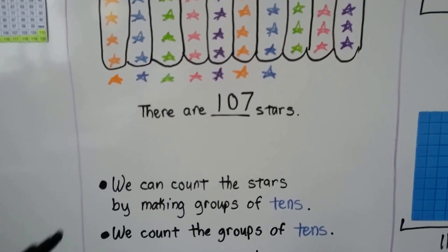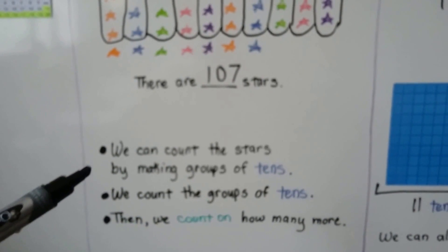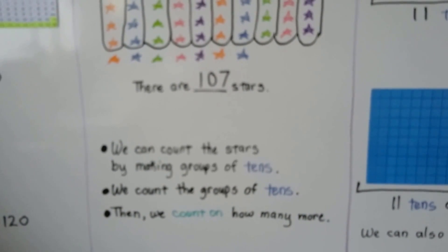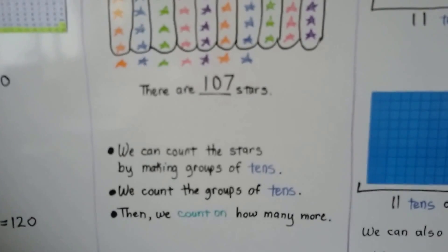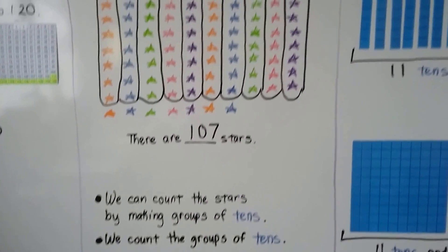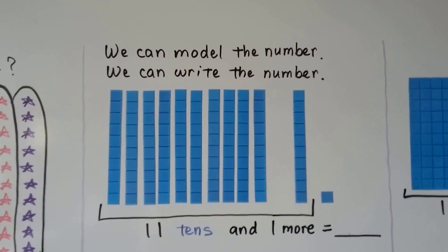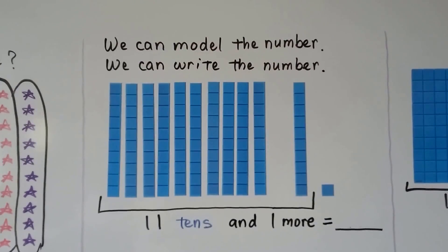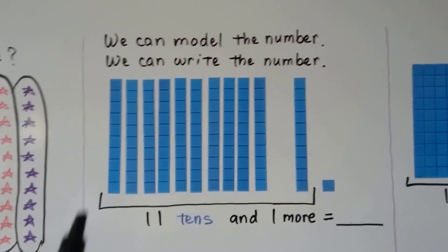We counted the stars by making groups of tens. We counted the groups of tens. And then we counted on how many more. We can model the number and we can write the number. Here we have 11 tens and one more.